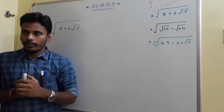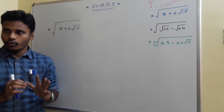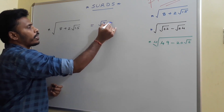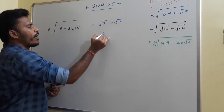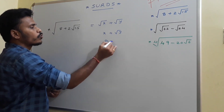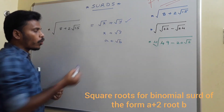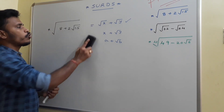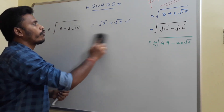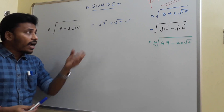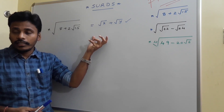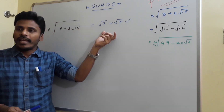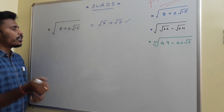To find the square root of 8 plus 2 root 15, we assume it equals root x plus root y. You could also assume x plus root 5, or a plus root b, but assuming root x plus root y makes the task simpler. So let square root of 8 plus 2 root 15 equal root x plus root y, and square both sides.